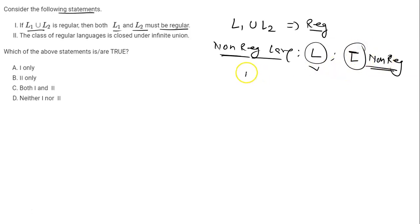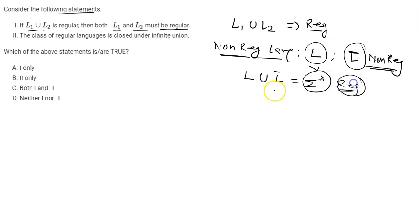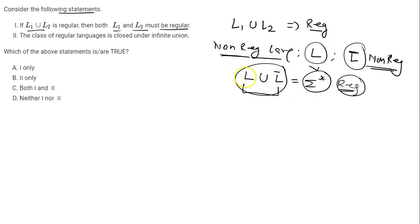Now you can very easily see what L union L complement is. L union L complement is Sigma star, and Sigma star is a regular language. So even though L union L complement is regular, L is non-regular and L complement is also non-regular. That is the reason you can say that Statement 1 is false.